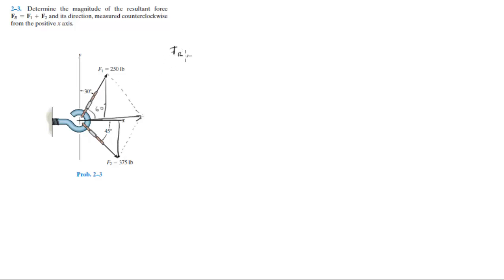So FRx is equal to F1, the x-component of F1, which is 250 cosine of 60 plus 375 cosine of 45, which is the x-component of F2, and this is equal to 390.17 pounds.